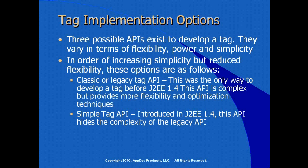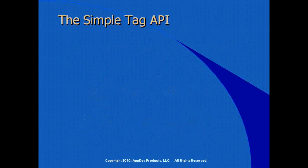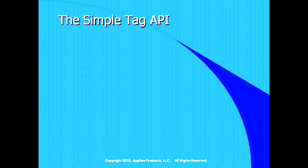We now have what evolved and was introduced in J2EE 1.4: the Simple Tag API. It hides the complexity of the legacy API and gives us extensions and implementations that take care of most of the heavy lifting, making the Java developer's job a lot easier. We also have the ability to do away with the TLD file and use a JSP file to create a tag — no Java coding required, much simpler development. We're going to concentrate on the Simple Tag API for Java developers.